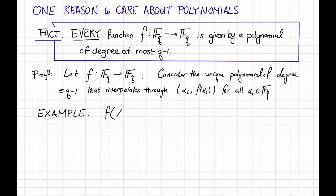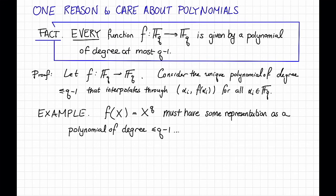One quick example of this. Consider the polynomial F(x) = x^q. By the fact above, this must have some representation as a polynomial of degree at most q-1. What is it? If you're familiar with finite fields, you might guess, correctly, that it's F(x) is just equal to x.